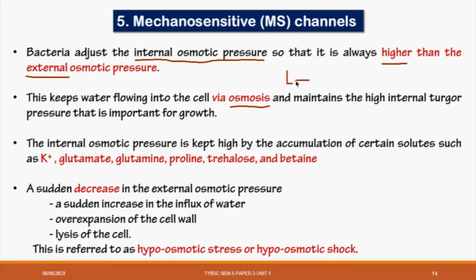We want the cell to have water — water should enter the cell from outside because all metabolic reactions take place inside the cell with the help of water. So the cell always keeps its internal osmotic pressure high by maintaining a high solute concentration inside. Water will flow from low to high concentration, so if internal is high, water will always flow from the outer environment to inside the cell. But this flow is not a gushing flow — it is not a force-driven flow, because there is no stress. Just like water entering sabudana (tapioca pearls) by osmosis — you have to soak it overnight, not minutes.